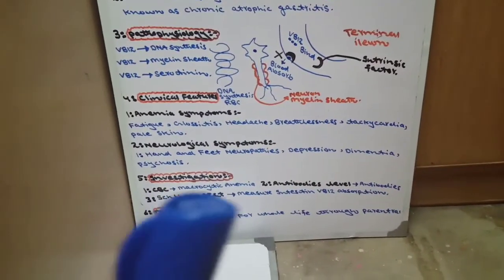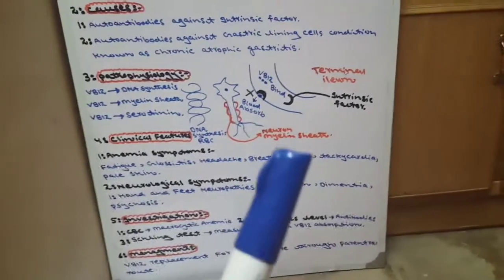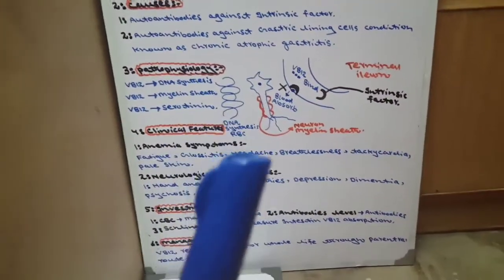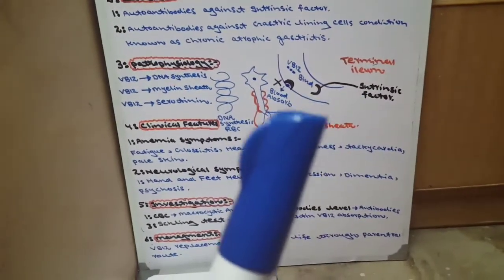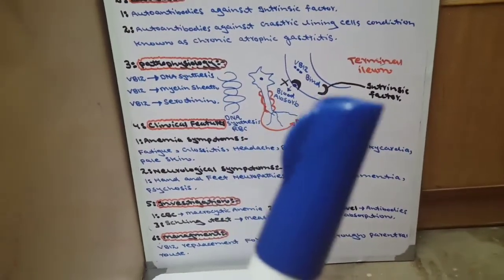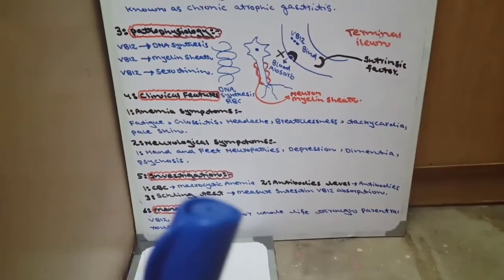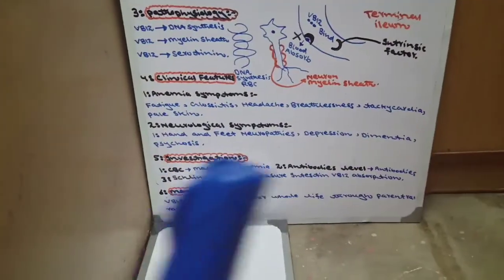We check vitamin B12 levels in serum. Vitamin B12 will be low. The Schilling test can also be performed. These are the three investigations.